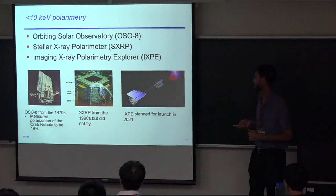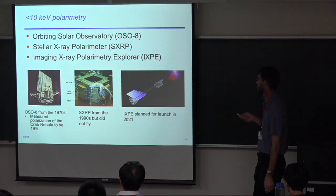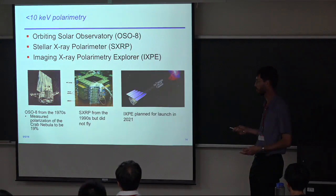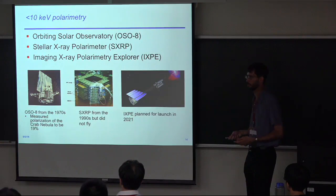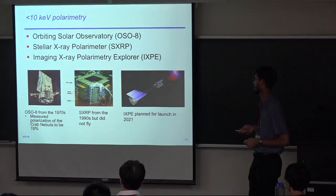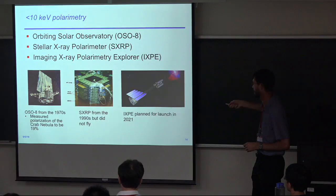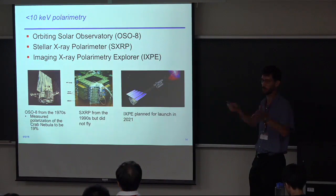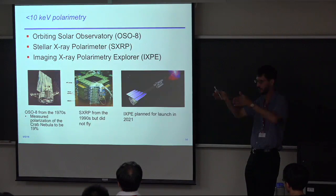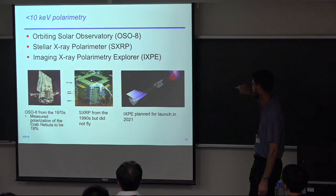Moving down again in energy to less than a few keV: there was a previous mission in 1970, and people have been arguing for a long time we need more soft X-ray polarization measurements. OSO-8 had one detection of polarization of the Crab Nebula at 19%. I worked on a soft X-ray polarimeter in the 1990s using proportional counters with a scattering element in the middle — polarization is all about scattering and putting your detectors at 90 degrees to the source — but it never flew. Now there's IXPE planned for launch in 2021.